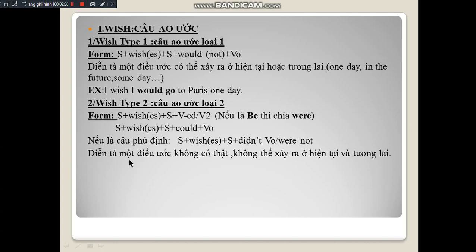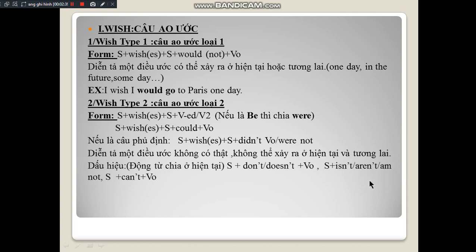Type 2 wish clauses express a wish that is not real and cannot happen in the present or future. The signal is that you see the verb conjugated in the present tense - for example, subject + don't/doesn't + bare infinitive, subject + isn't/aren't, or subject + can't + bare infinitive.